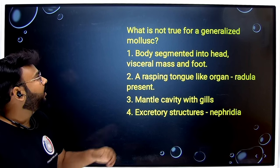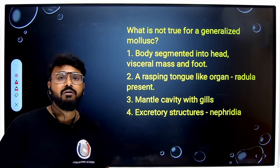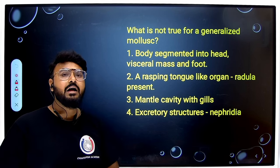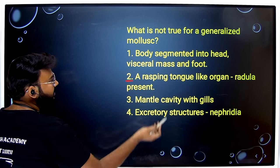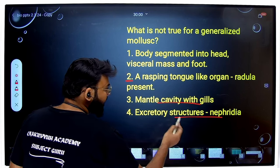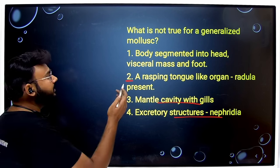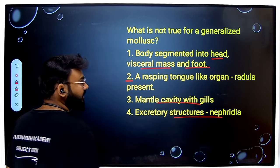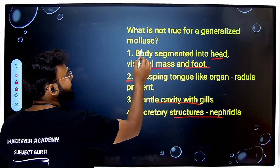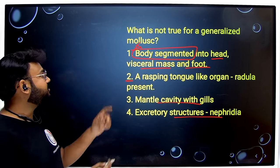In the next question they are asking which is not true for a generalized mollusca. The options are: body segmented into head, visceral mass and foot; a rasping tongue-like organ radula present; and mantle cavity with gills and excretory structures are nephridia. Radula is present in mollusca — correct. Mantle with gills is also correct. Nephridia as excretory structure is also correct. Their body does have head, visceral mass and foot — but the catch is the word segmentation. Their body is not segmented. So the first option is our correct answer.